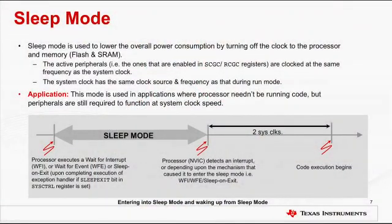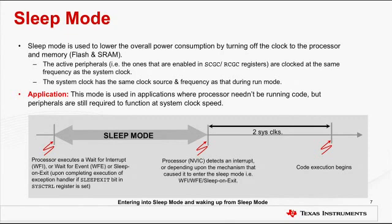To reduce power consumption, the microcontroller can be configured to operate in sleep mode. The overall power consumption is reduced in sleep mode by turning off the clock to the processor and memory — that is, flash and SRAM. This mode is used in applications where the processor needn't be running code, but peripherals are still required to function at the system clock speed. The active peripherals — those enabled in the SCGC or RCGC registers — are clocked at the same frequency as the system clock, which has the same source and frequency as during run mode. The device enters sleep mode when the processor executes a wait-for-interrupt or wait-for-event instruction, or upon completing execution of an exception handler if the sleep-on-exit bit in the system control register is set. The device exits sleep mode depending on the condition or mechanism that caused it to enter.